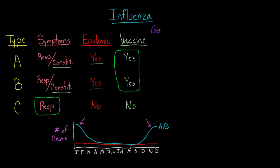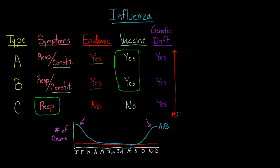What about genetic drift? Genetic drift alludes to the idea of mutations building up over time, causing changes in the way the virus looks to your immune system — the proteins might change a little bit. All three types — A, B, and C — have mutations from time to time, but they mutate at different rates. The mutation rate is lowest for type C and highest for type A.